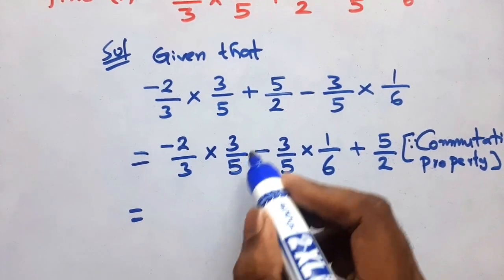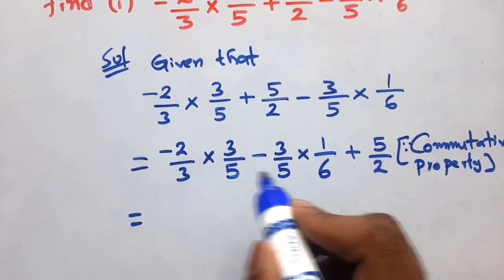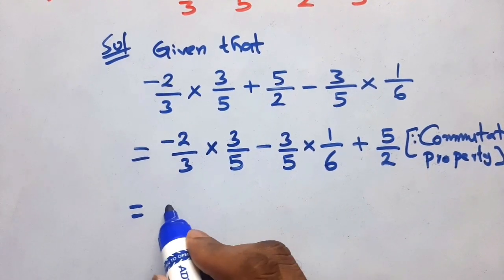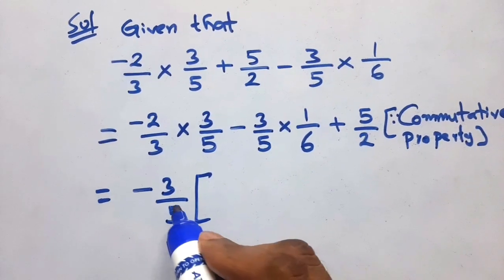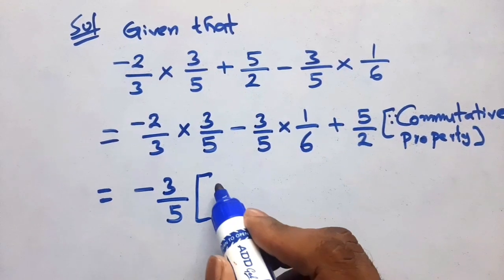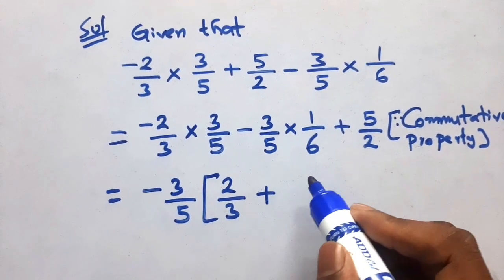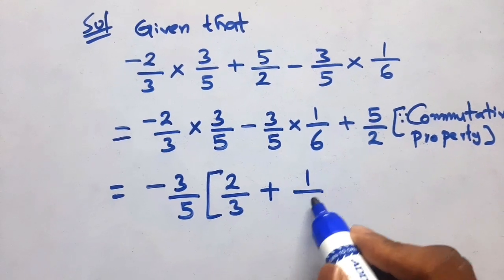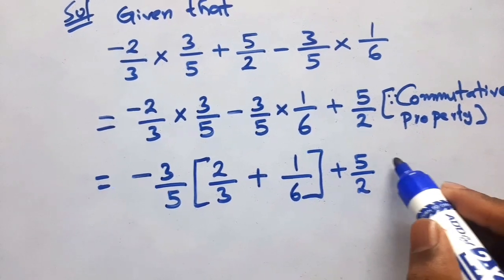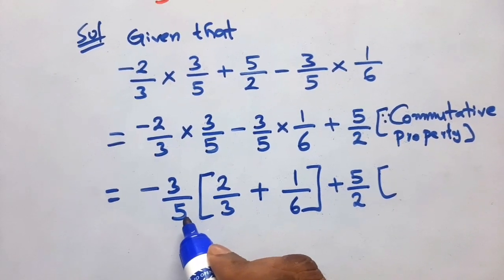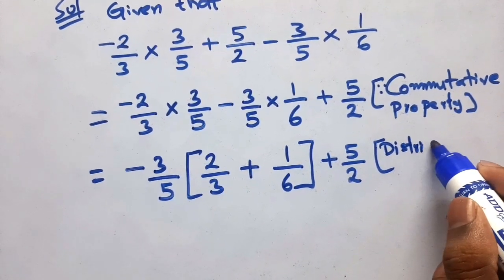Next, we see 3 by 5 is here and also 3 by 5 is here. So we combine: minus 3 by 5 and minus 3 by 5 come together as minus 3 by 5. What is left from the first part is minus 2 by 3, and from the second is 1 by 6, plus 5 by 2. Here we apply the distributive property: a into b plus c.